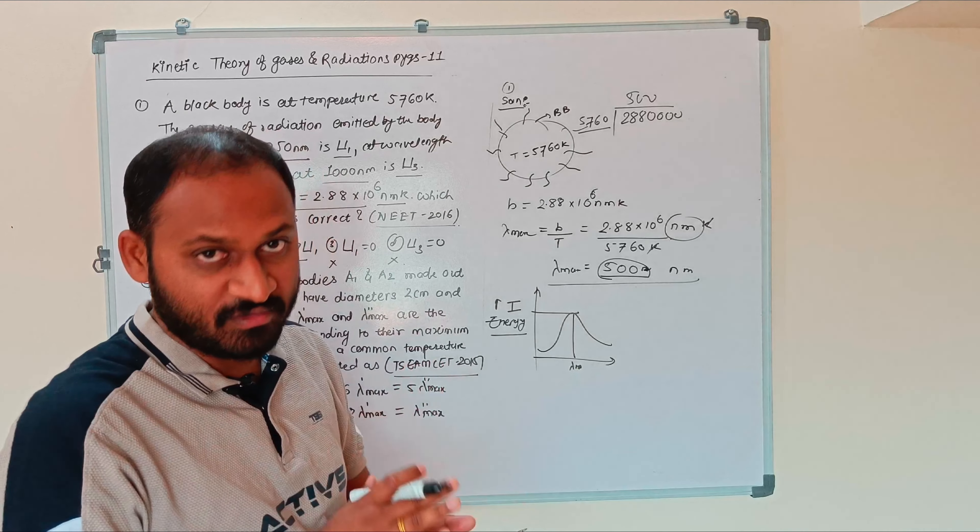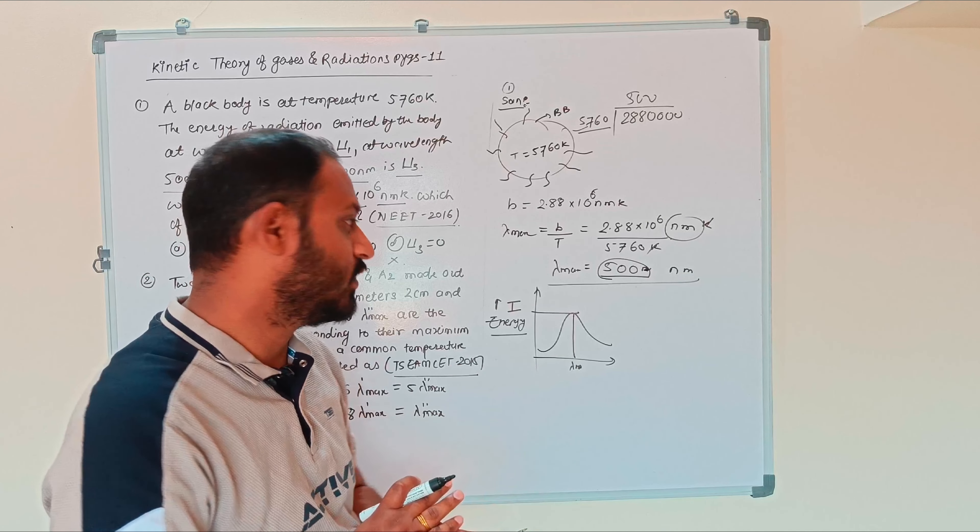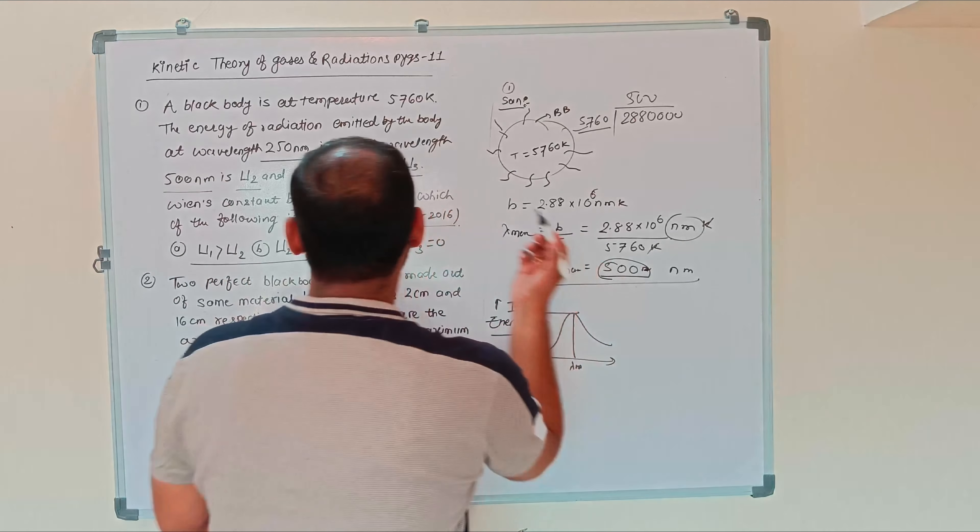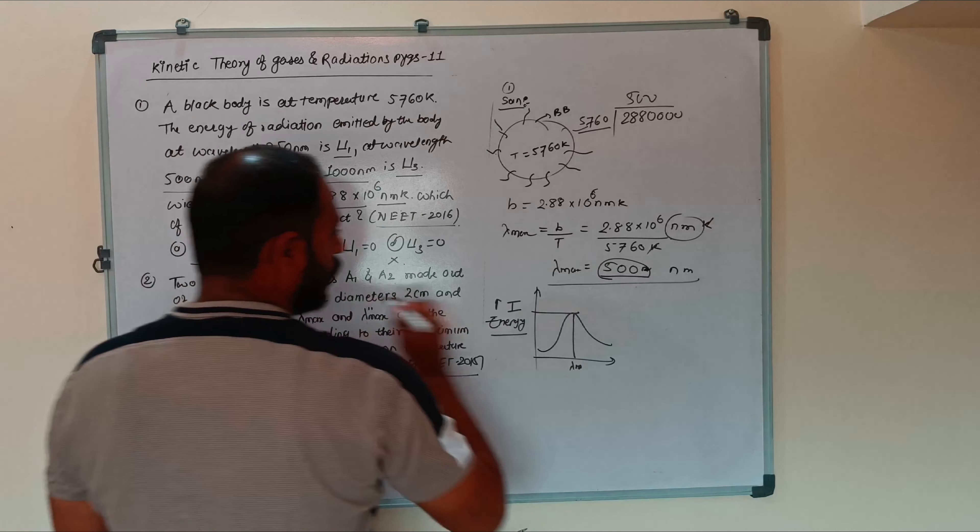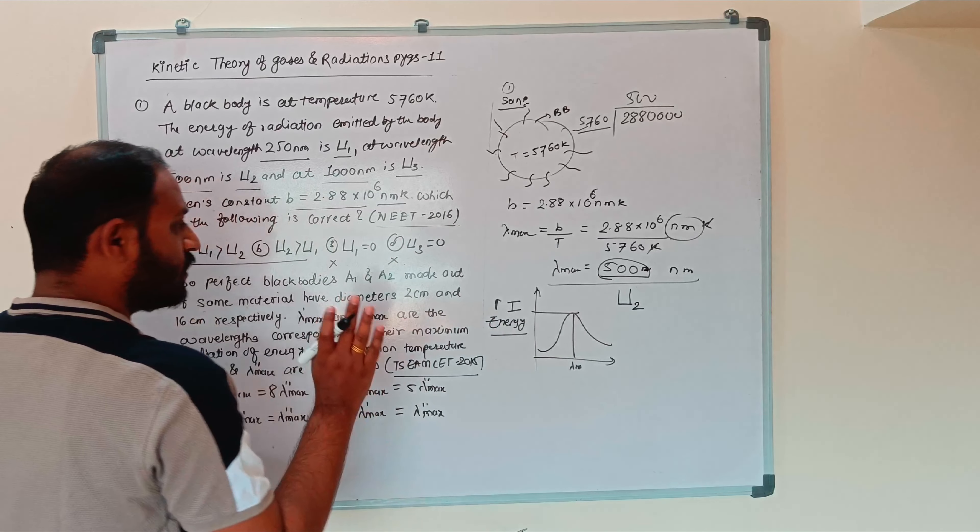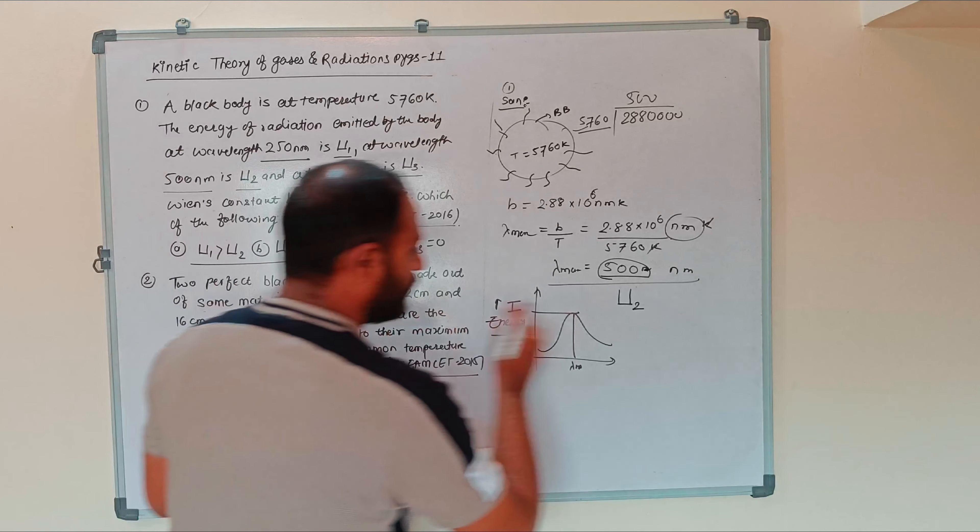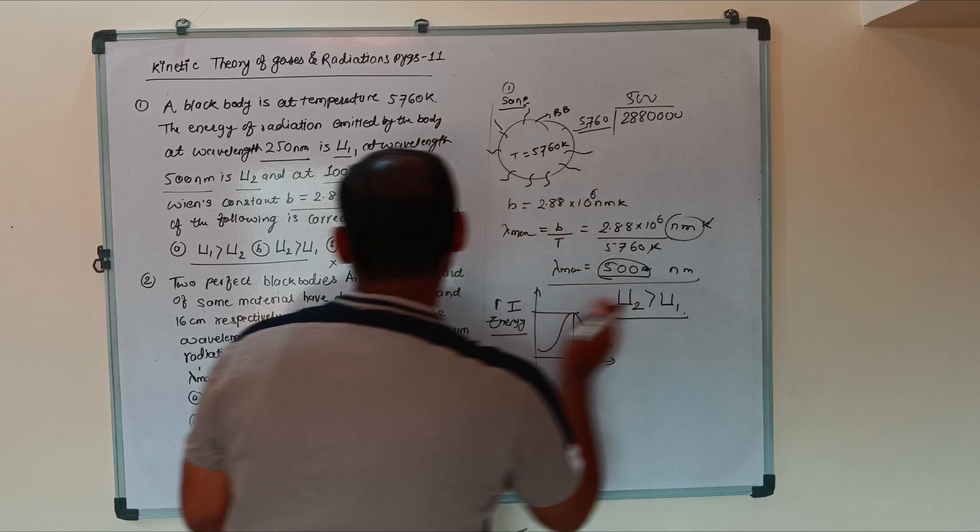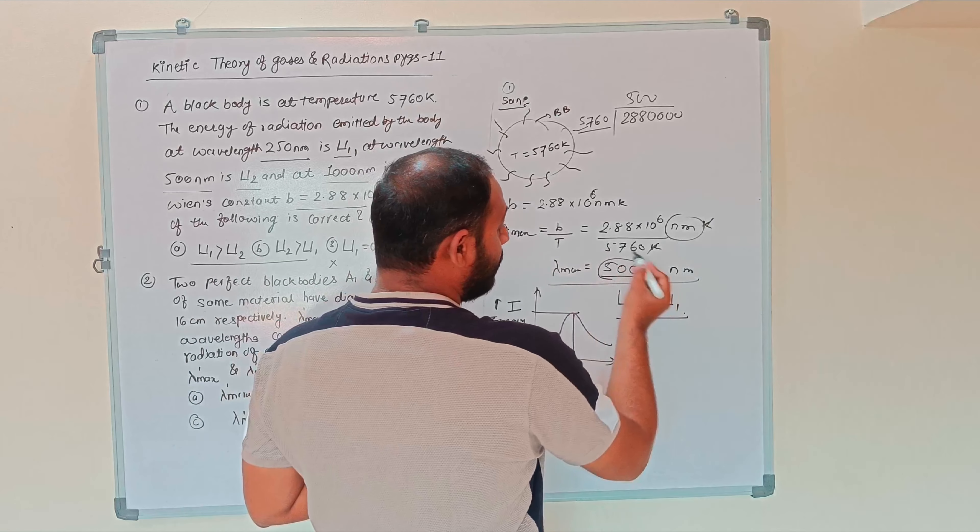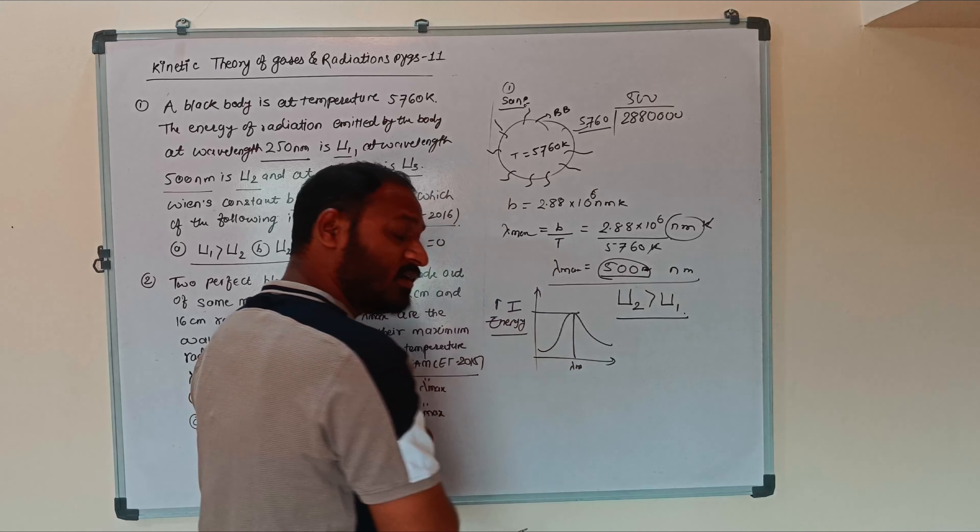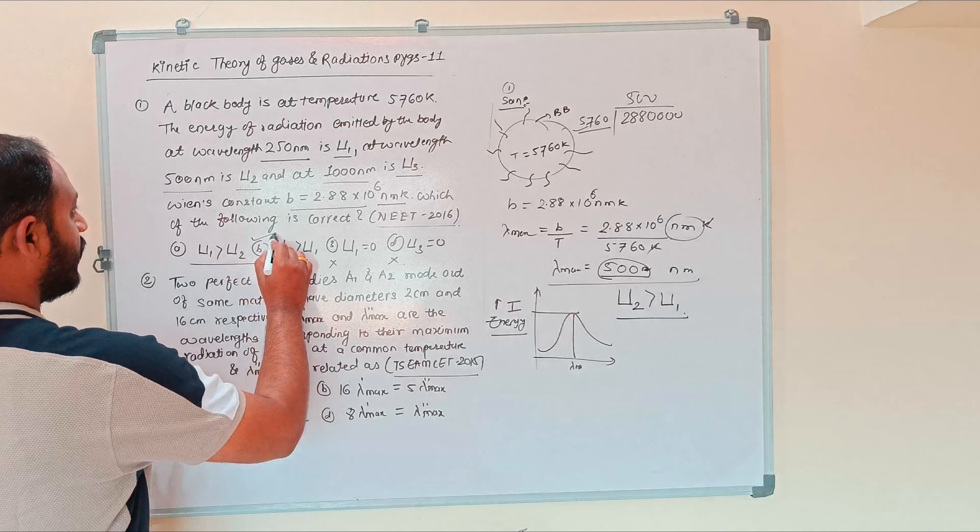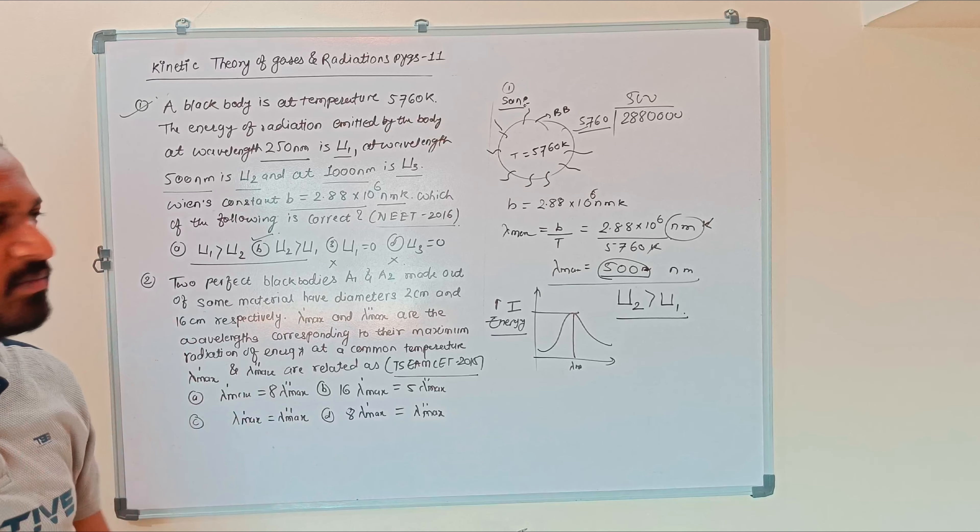Black body temperature and displacement constant gives lambda max of 500 nanometer. 500 nanometer corresponds to energy U2. Comparing U1, U2, and U3, we find U2 is greater than U1, and U2 is greater than U3. This is how we find the solution for numerical number first.